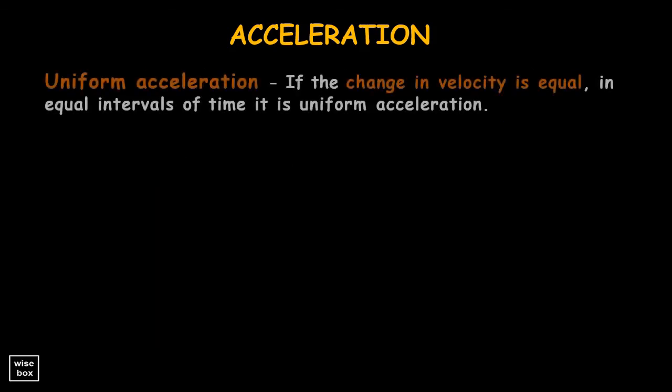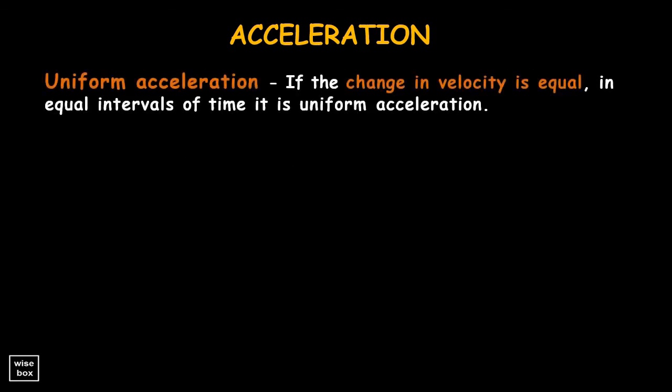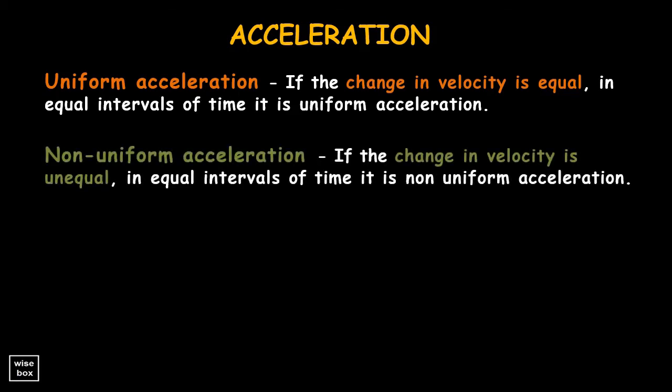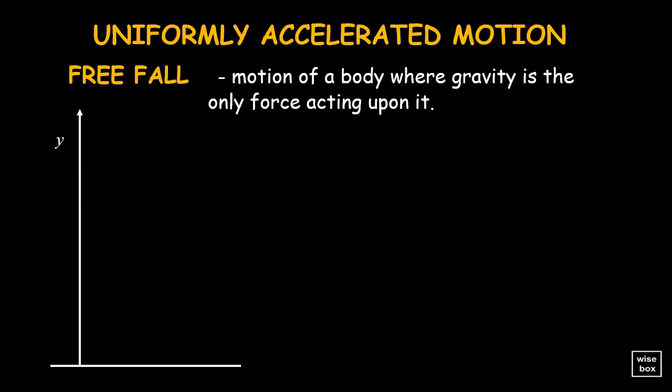If the change in velocity is equal in equal intervals of time, it is uniform acceleration. If the change in velocity is unequal in equal intervals of time, it is non-uniform acceleration. An example of uniformly accelerated motion is free fall motion.